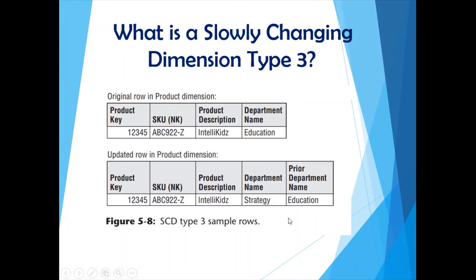There are several things missing in type 3 — you do not know when the exact change happened, and you would need additional columns for that. If the department name changes again from Strategy to something else, you would need yet another column. This means for every change you have to keep adding columns, which is not practical in a real data warehouse because it requires table structure changes every time. So type 3 is not a practical solution.